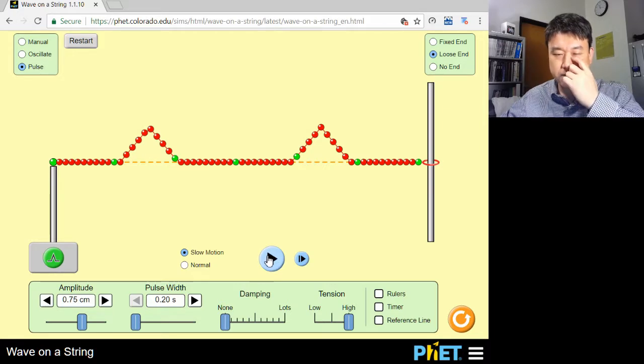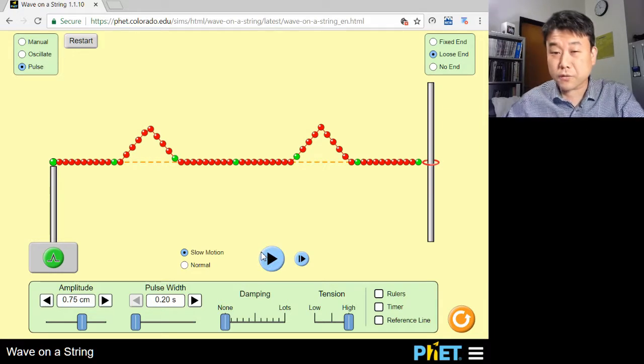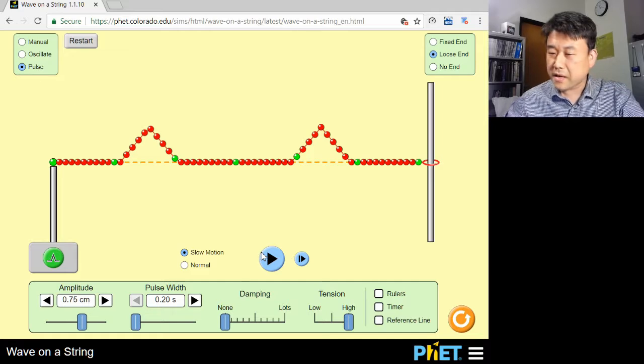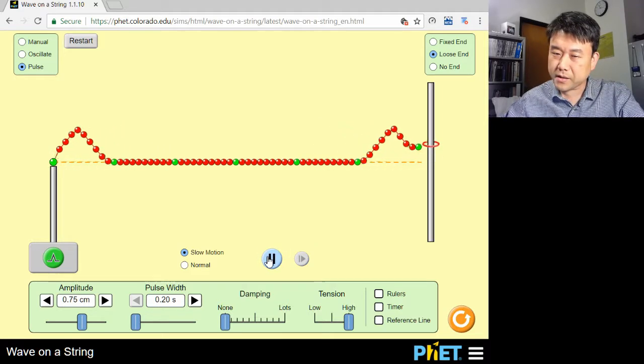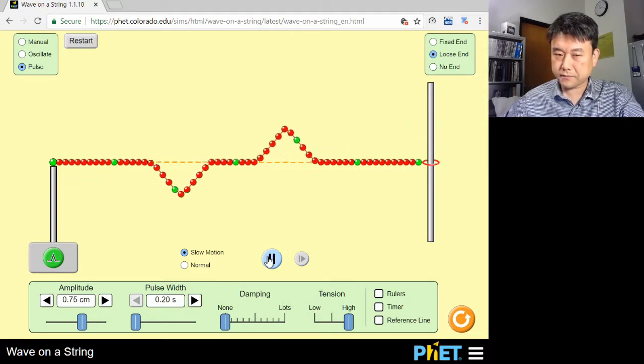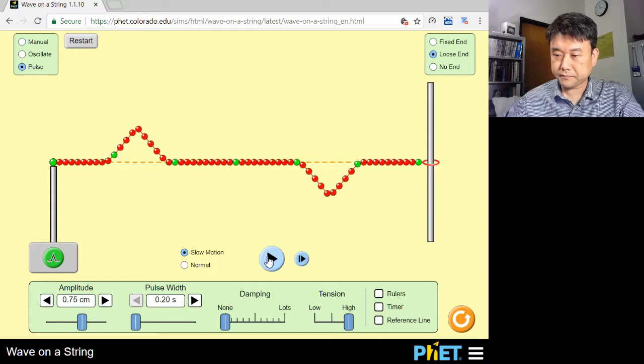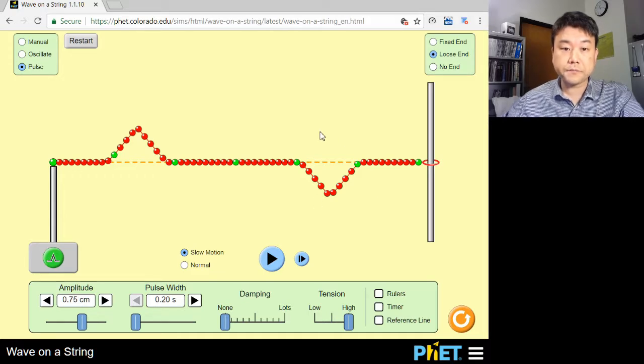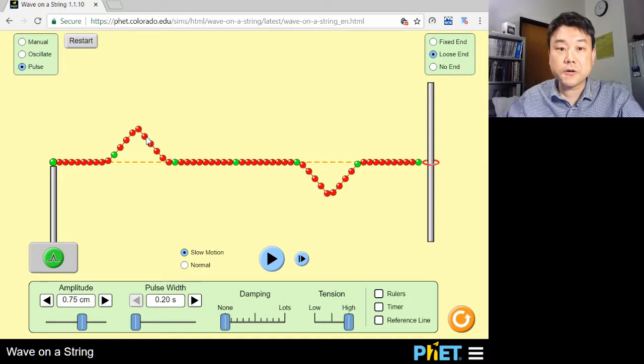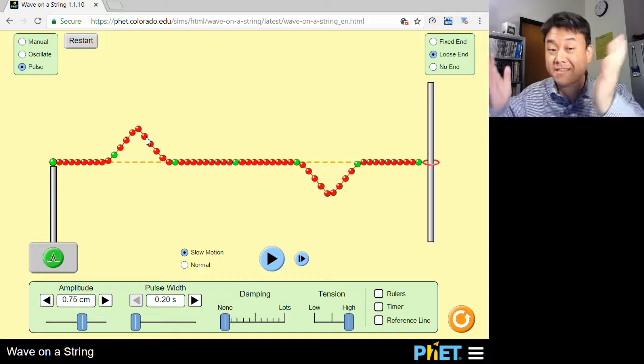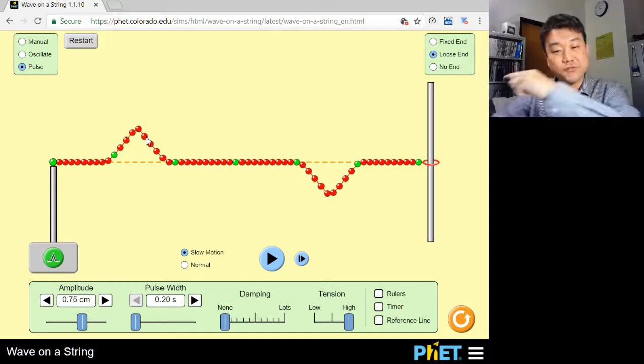Huh. Did they bounce off each other or go through each other? Actually, if we wait a little bit, we will see which it was. The rightward moving pulse was upside down before the collision, which means these two pulses just passed through each other. So that's the boring thing that happens when two waves overlap. Nothing happens. They just pass through each other.